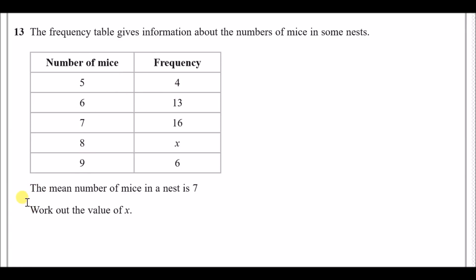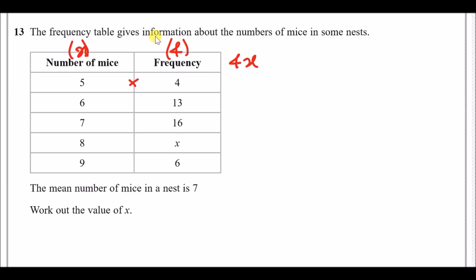At the bottom, the mean number of mice in a nest is seven — work out the value of x. The best way to do this is to go through the mean procedure. To calculate the mean we need to make a new column called fx, where f is the frequency and x is the number of mice, so fx is essentially f times x.